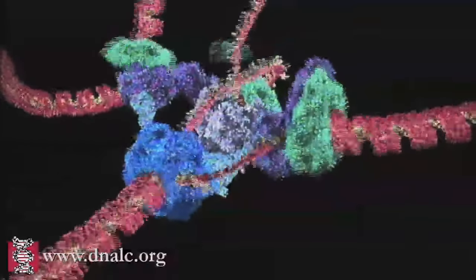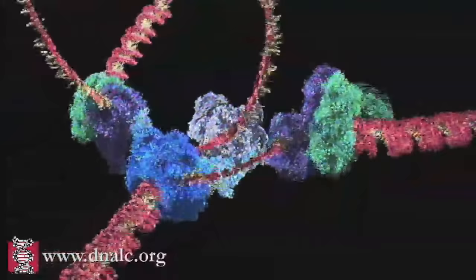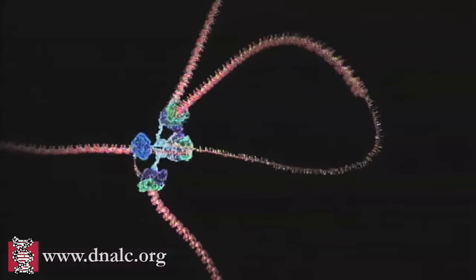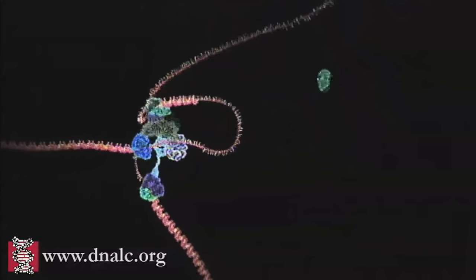Things are not so simple for the other strand because it must be copied backwards. It is drawn out repeatedly in loops and copied one section at a time.